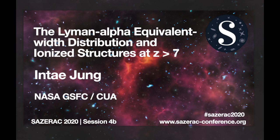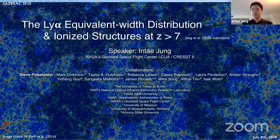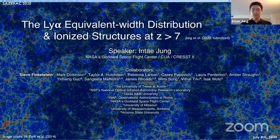My name is In Tae Jung. I'm a postdoc at NASA Goddard. Today I'm going to talk about the Lyman-alpha equivalent width distribution and ionized structures into the epoch of reionization at redshifts above seven.